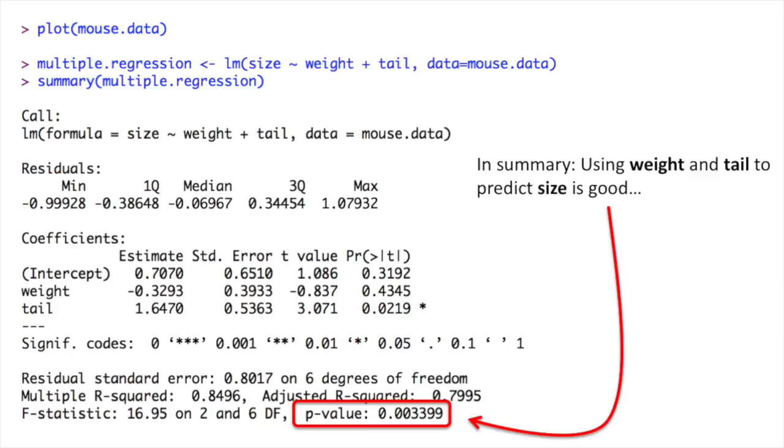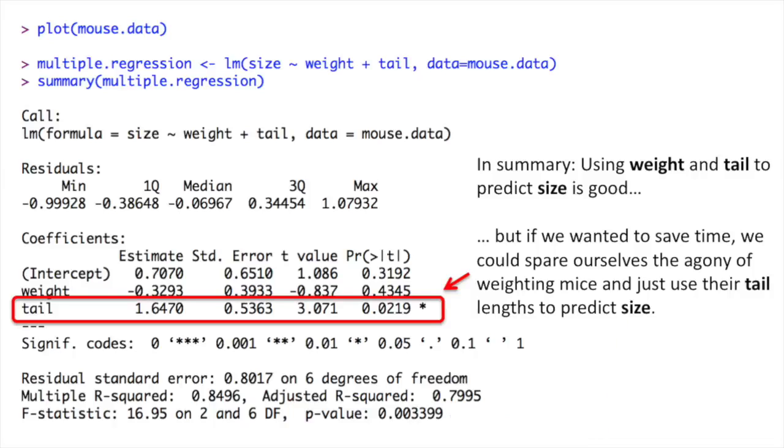In summary, using weight and tail to predict size is good. But if we wanted to save time, we could spare ourselves the agony of weighing mice and just use their tail lengths to predict size.